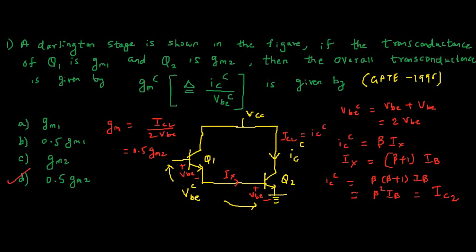So the answer is 0.5 GM2. This is the overall transconductance of a Darlington stage, and that is nothing but 0.5 times GM2. 0.5 because we have the effect of these two base to emitter voltages. That gives us the term 1 by 2, that is 0.5.